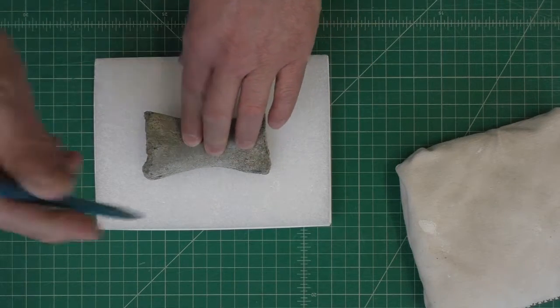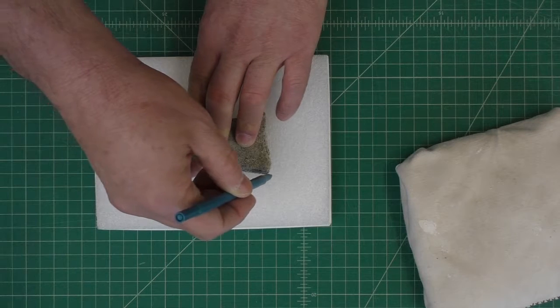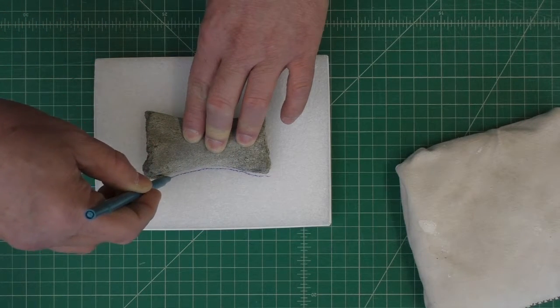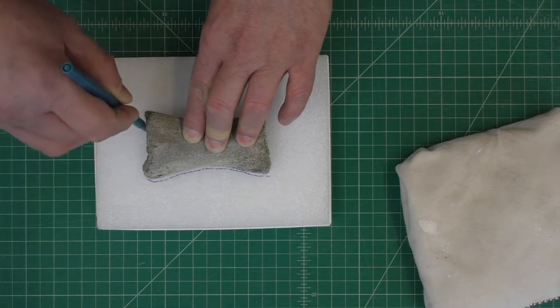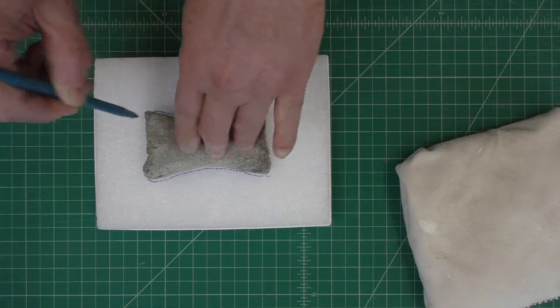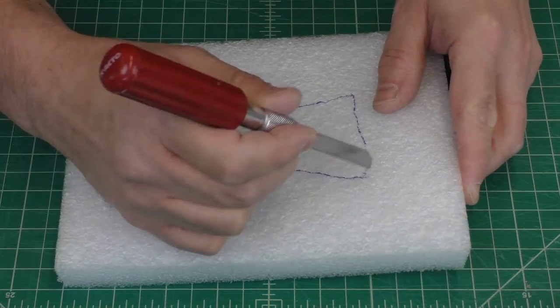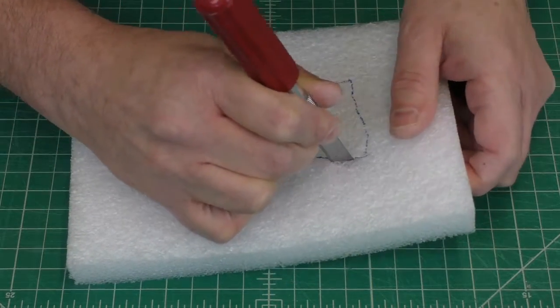Decide how the specimen will best be arranged in the tray, then trace its silhouette on the surface of the bed in ballpoint pen. Ballpoint is great because it cleans off pretty easily with ethanol.